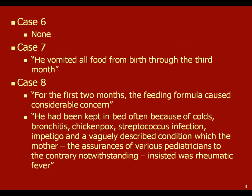Case six was followed by regurgitation and vomiting early in life and difficulty with formula. Then we see recurrent infection — colds, bronchitis, chicken pox, strep infection, impetigo — and the family insisted it was rheumatic fever despite assurances from pediatricians to the contrary.